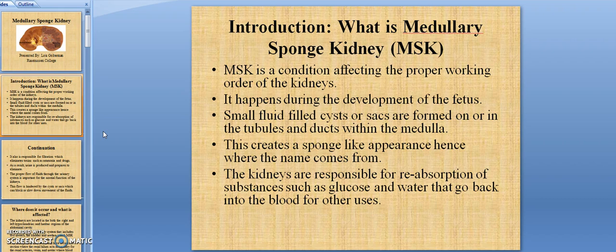MSK is a condition affecting the proper working order of the kidney. It happens during the development of the fetus. Doctors do not know why this happens. Small fluid-filled cysts or sacs are formed on or in the tubules and ducts within the medulla. This creates a sponge-like appearance, hence the name sponge kidney.